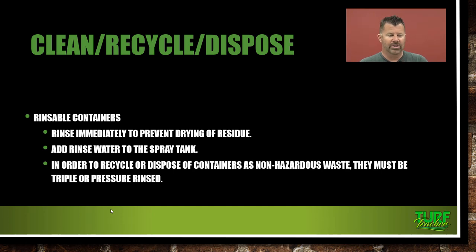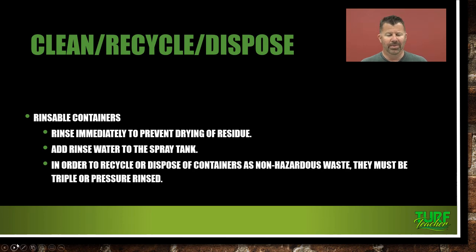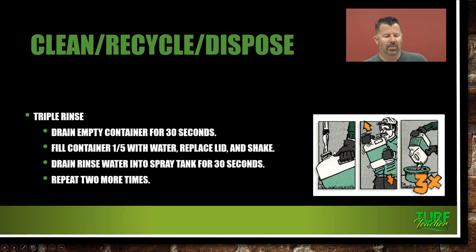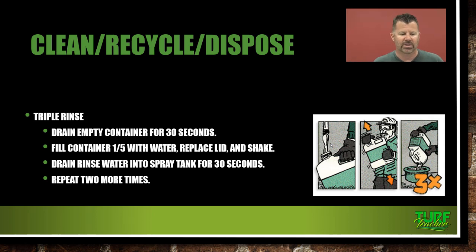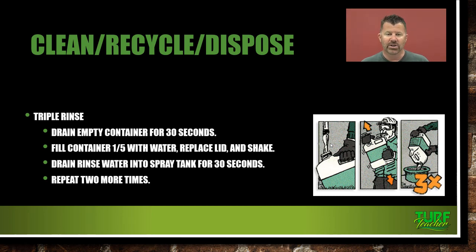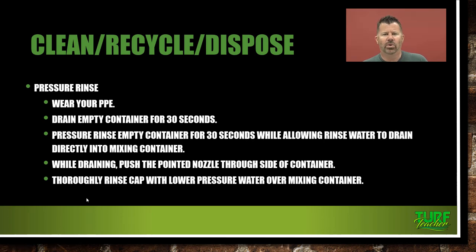Rinse containers immediately to prevent the drying of residue, and add the rinse water to the spray tank. In order to recycle or dispose of these containers as non-hazardous waste, they must be triple or pressure rinsed. When you finish with that gallon jug of broadleaf herbicide, hold it upside down in your measuring cup of water and make sure it's empty for at least 30 seconds. Fill the container with one-fifth water, replace the lid and shake hard, then drain the rinse water into the spray tank for 30 seconds. Repeat it two more times. You then have a triple-rinsed container you can dispose of properly according to the label or take to the pesticide collection days that your county extension hosts.